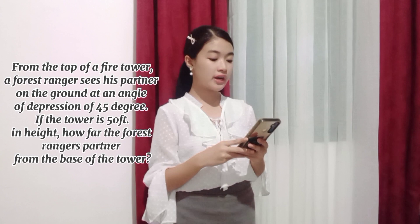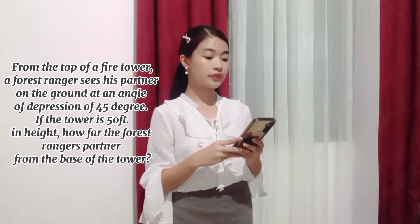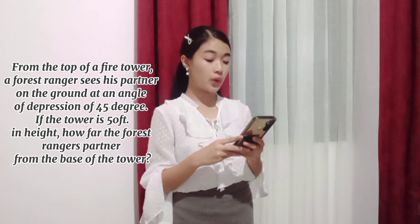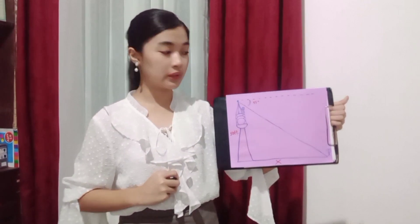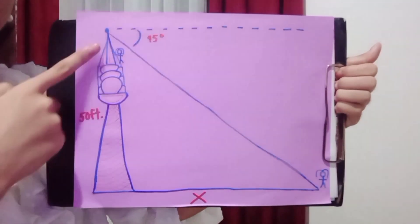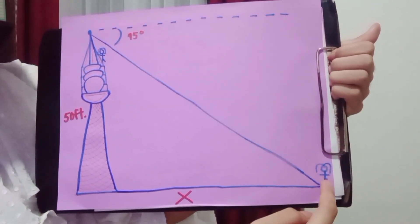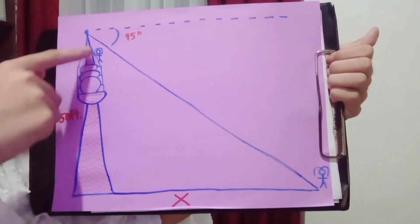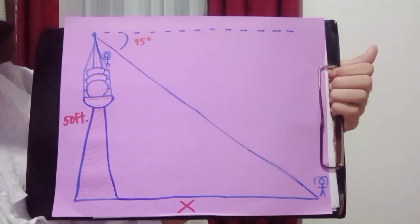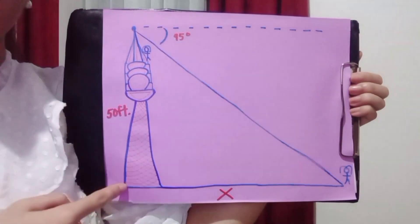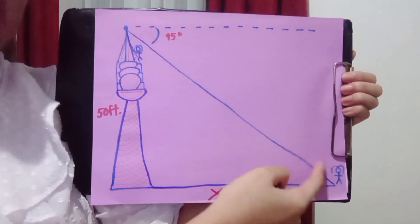Okay, I have example number one. From the top of a fire tower, a forest ranger sees his partner on the ground at an angle of depression of 45 degrees. If the tower is 50 feet in height, how far is the forest ranger's partner from the base of the tower? Okay, this is the example. This is the tower, and may tao dito sa taas. Ang tinitingnan niya ay yung partner niya. Ang hanapin natin dito ay ang layo niya sa tower, and the height of the tower is 50 feet. At may angle of depression po siya na 45 degrees. Ang hanapin po natin dito ay ang value ng x, which is ito po — kung gaano daw po kalayo ang partner niya dito sa tower.